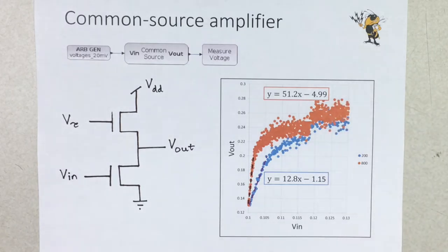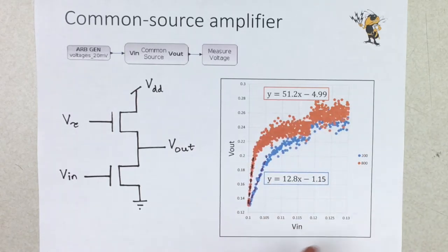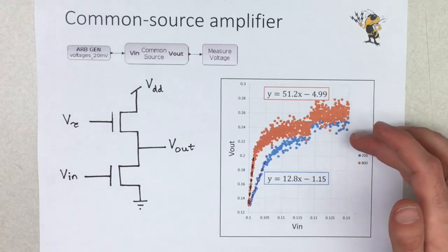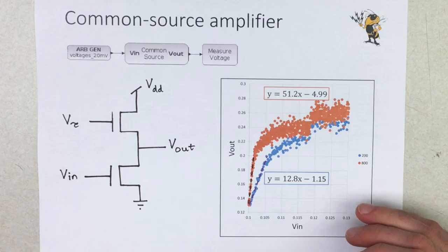The difference between these curves is the density of measurement. So we have more measurements per step of input voltage for the orange and less for the blue. This actually ended up resulting in completely different measurements for gain, which honestly we don't know how to explain.